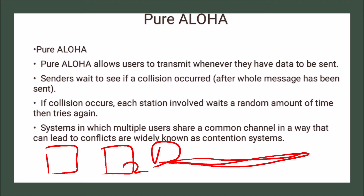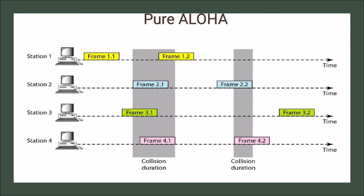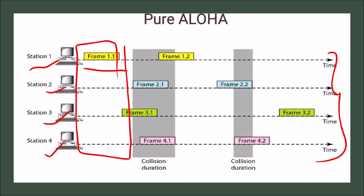In a contention system, multiple users share a common channel, which leads to conflicts. Here we have station 1, station 2, station 3, and station 4, shown along a time duration on a single shared channel. At one point in time there is only one frame being transferred — frame 1.1 — so there is no collision. But in another portion, frame 1.2, frame 2.1, and frame 3.1 are all transmitting simultaneously.